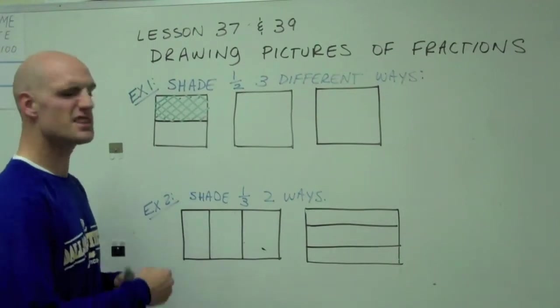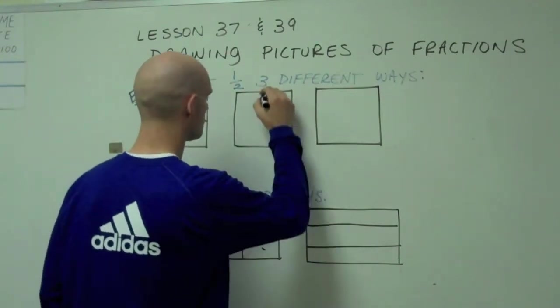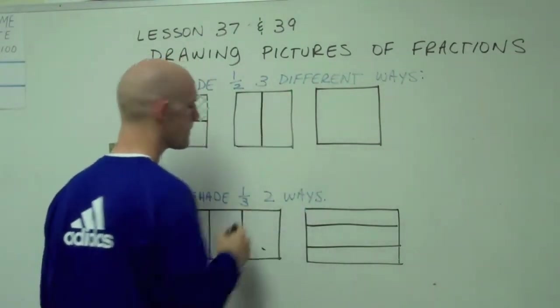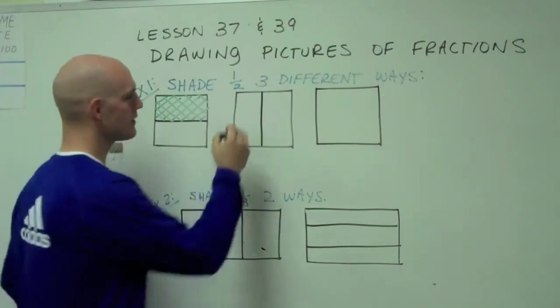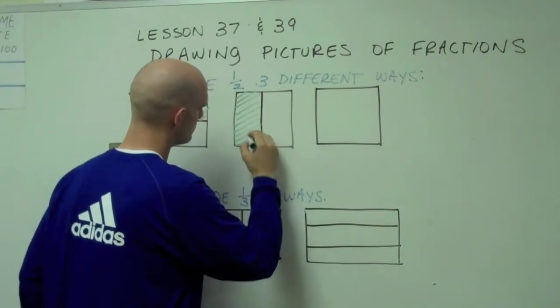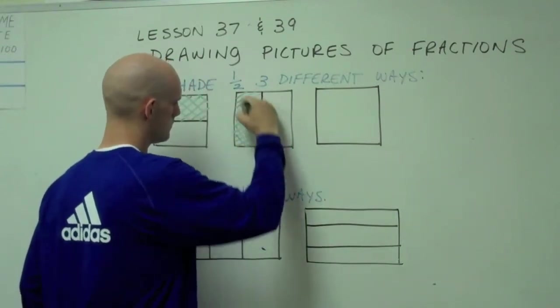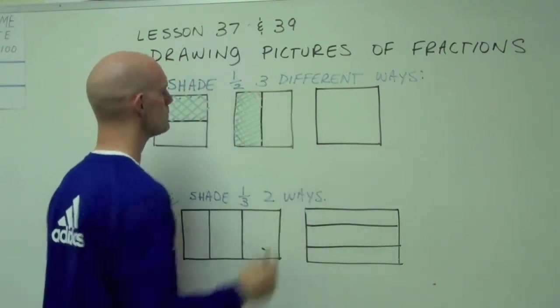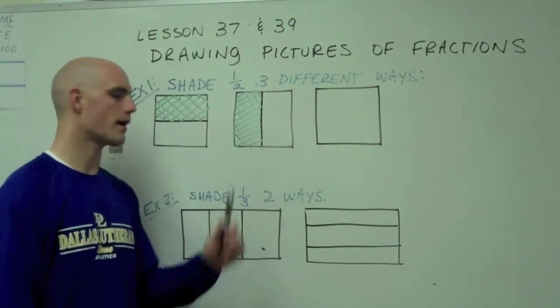Another way I could divide it is to divide it vertically, or up and down. When I shade one of these two pieces, I shade one half of this square.